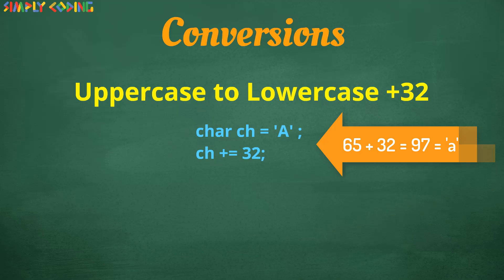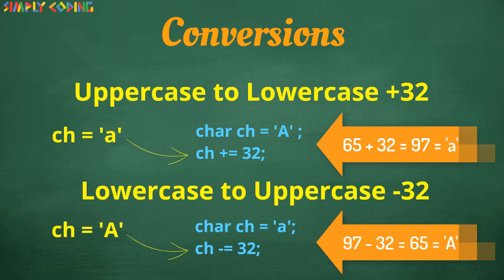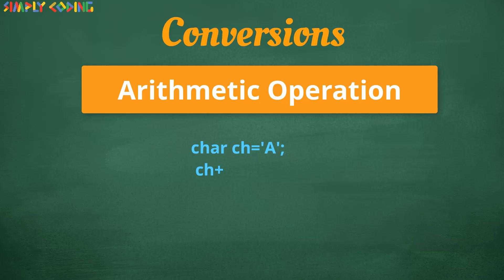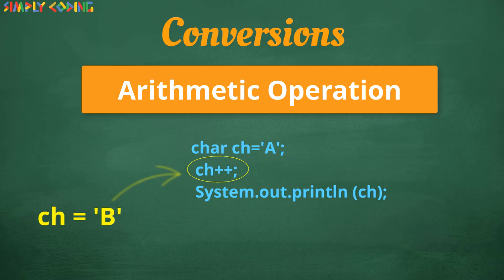Similarly, minus 32 is used to convert lowercase to uppercase. Here 97 minus 32 gives 65 which is capital A. So you can see that you can use char as integer data type on which you can perform arithmetic operations. For example, you could be asked what is printed in this code snippet. Here ch is using increment operator so it will display the next character B.